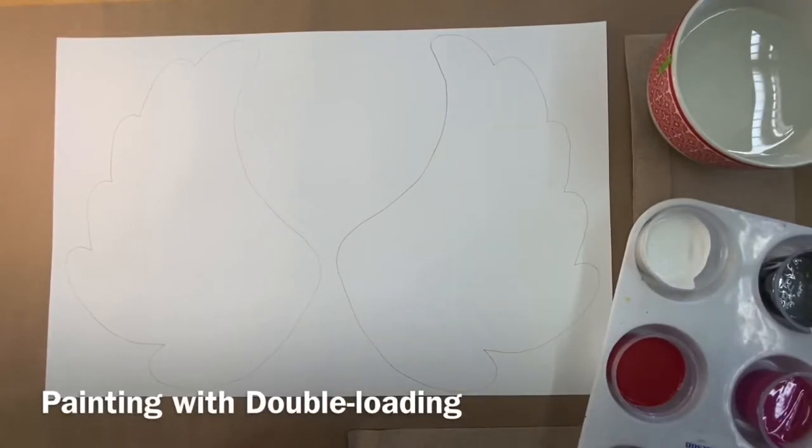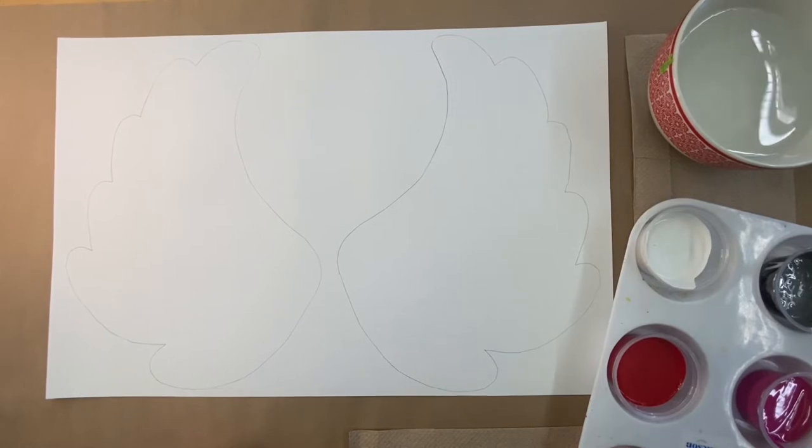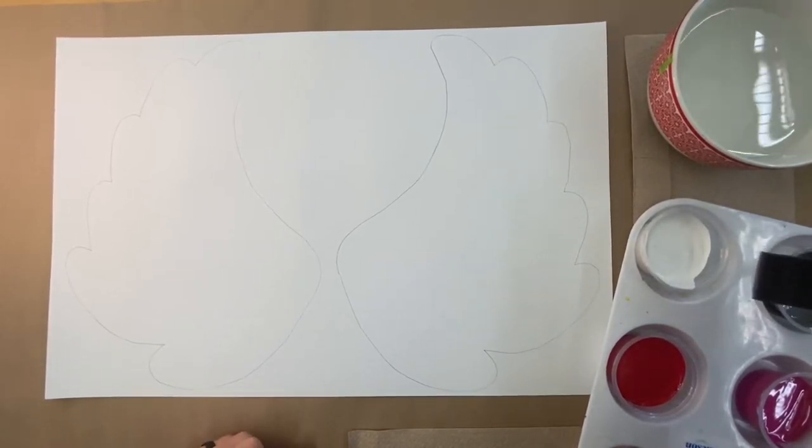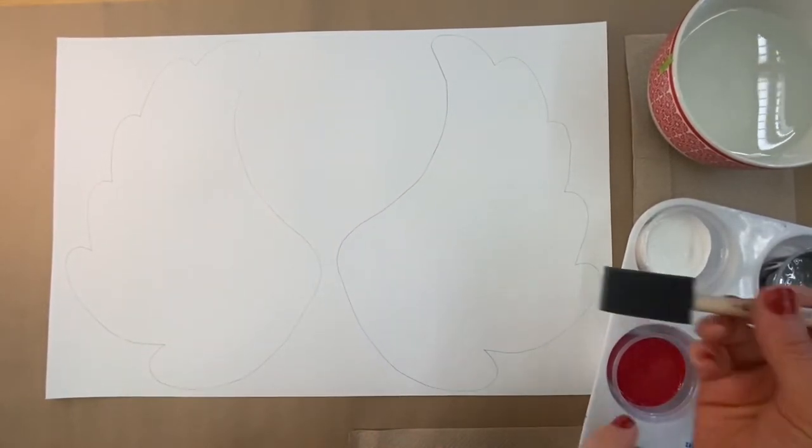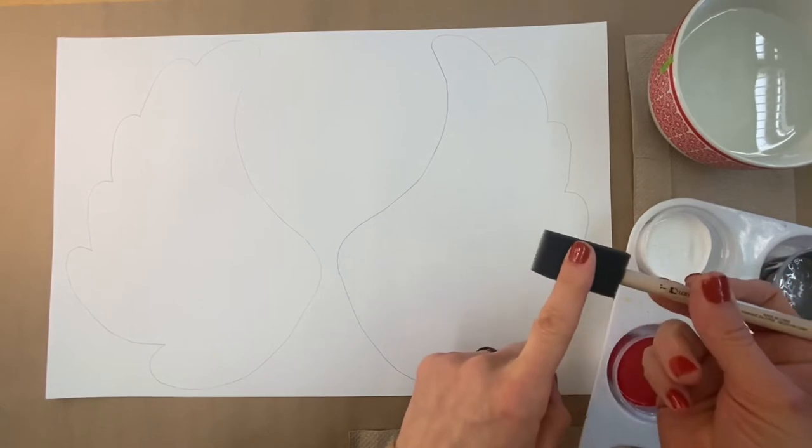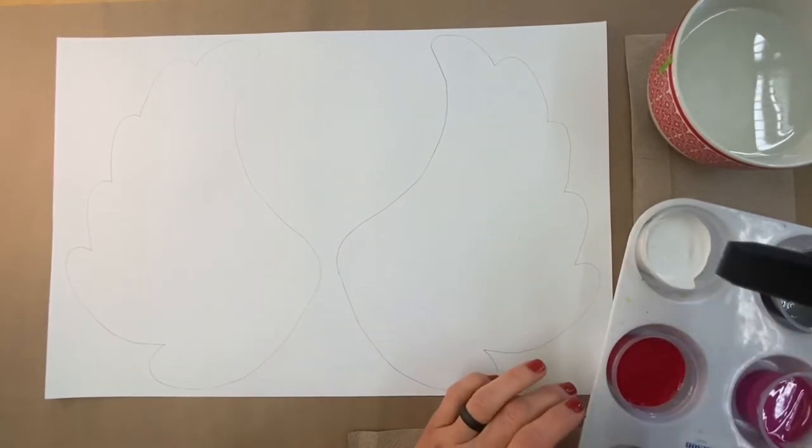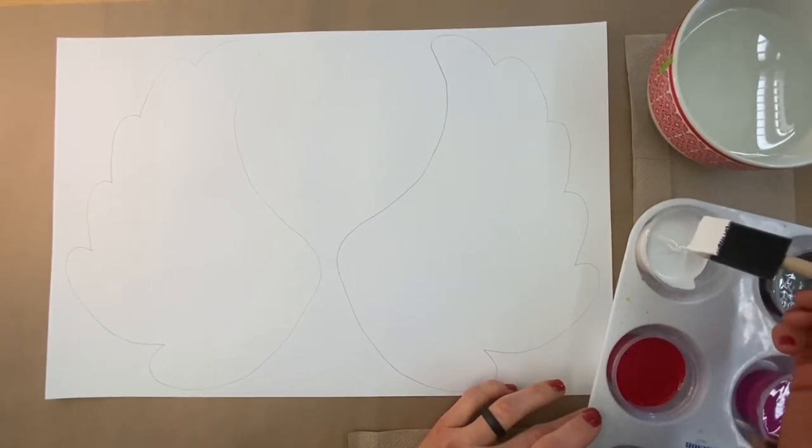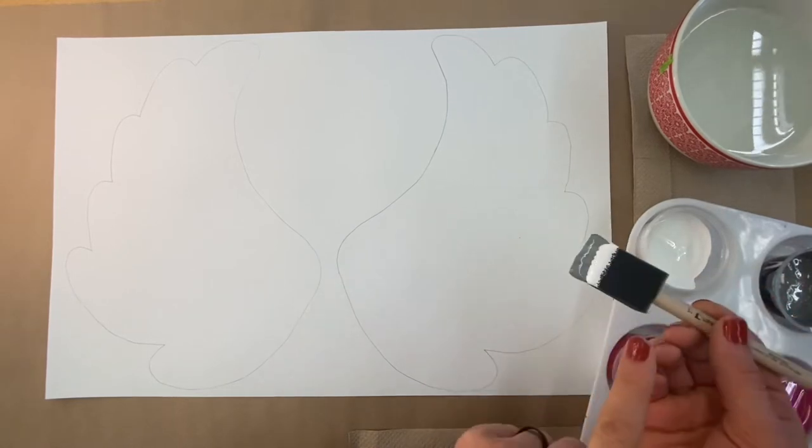We're going to be painting our wings and heart with a technique called double loading. What I like about double loading is that it creates a textured appearance on your art. The way that you do it is you take your brush, in this case a foam brush—you could use a regular brush as well—and you double dip it, kind of like what we sometimes like to do with french fries and ketchup, double dip into the paint.